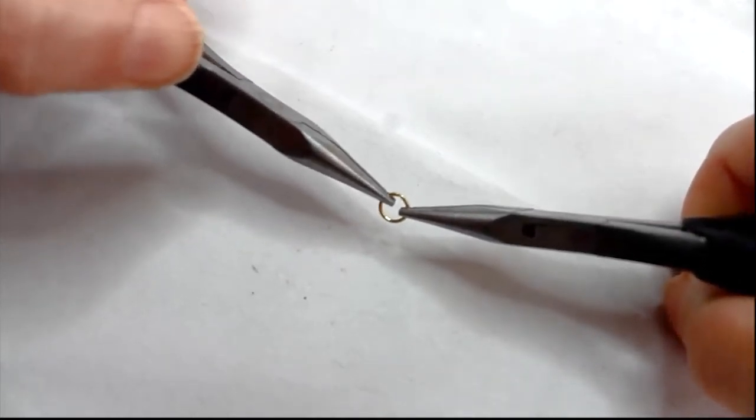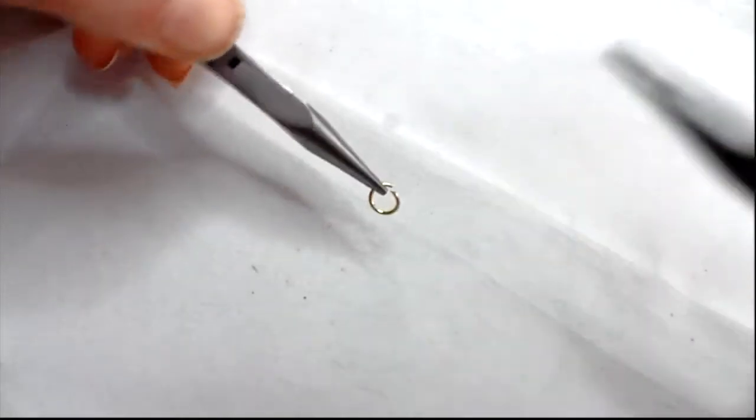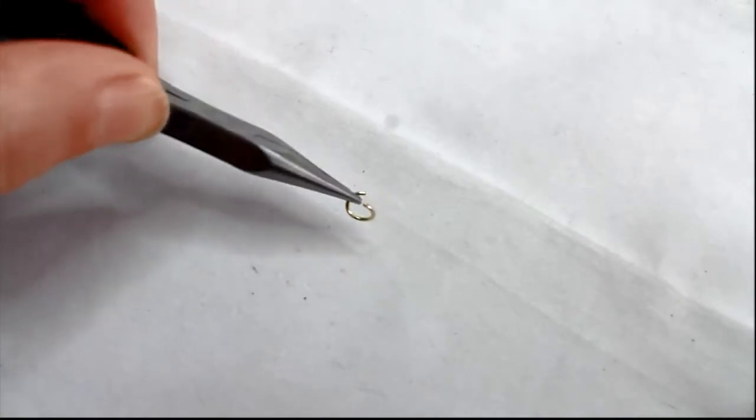Pull one hand toward you and move the other hand away. This opens the jump ring and keeps it in its perfectly circular shape. Add your component and you're ready to close the jump ring.